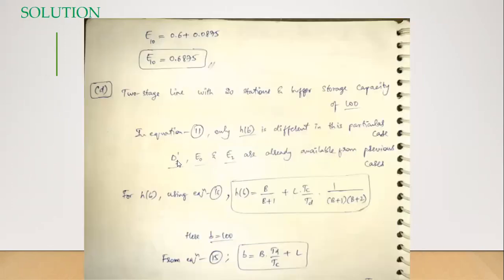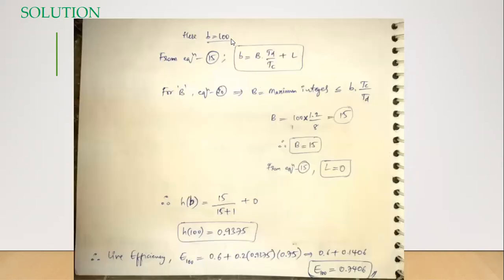For 100 storage capacity, we use the same d1-dash, but h(b) is different because capital B and L will change due to small b being 100. A change in small b affects capital B and capital L. Using the same procedure: b is 100, and capital B is the maximum integer less than or equal to the product — that product is 15, which is already an integer, so capital B equals 15, and therefore L equals 0.